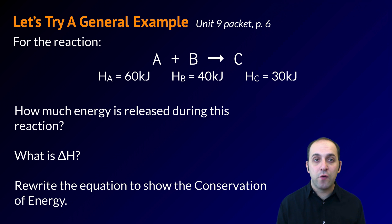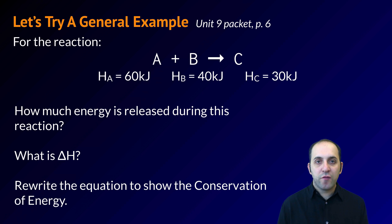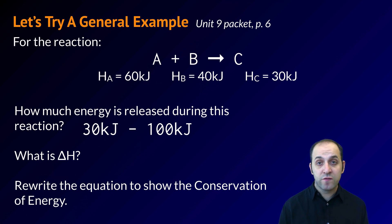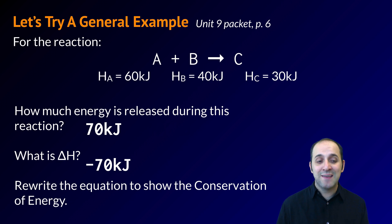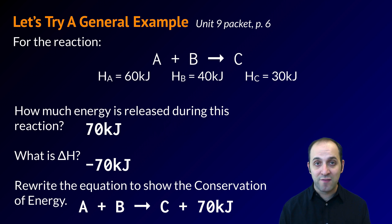Here's a general example from page 6 of the unit 9 packet — an exothermic reaction. To find energy released, take the energy in the products (30 kJ) and subtract the energy in the reactants (100 kJ) to get 70 kJ. Delta H is negative 70 kJ — 30 minus 100 is negative 70, meaning that energy was released. Rewriting to show conservation of energy, 70 kJ of energy is placed on the product side. Notice we don't write negative 70 — the fact that it's on the product side conveys the negative meaning.